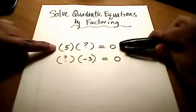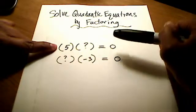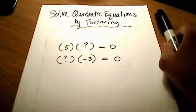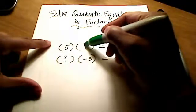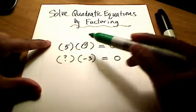For this first equation here, do you see that I'm multiplying 5 times some number, which I don't know what it is, is equal to 0. And I'm getting a product of 0. So if I ask you what is that missing number, then I hope it's easy to see it's got to be 0. The only way 5 times something is going to be 0 is if that missing number is 0.